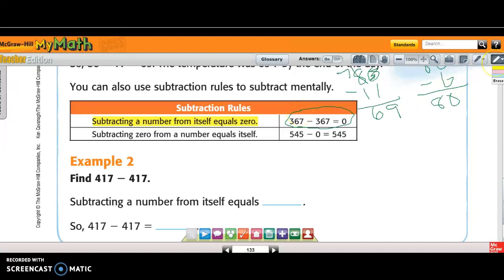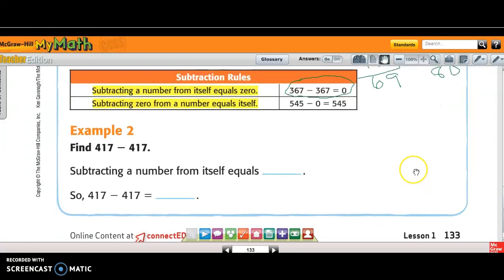But then it says when subtracting 0 from a number equals itself. So now I have 545 minus 0 equals 545. Now it tells you to go ahead and subtract a number. Subtracting a number from itself is equal to what again? 0. So 417 minus 417 is going to be 0.